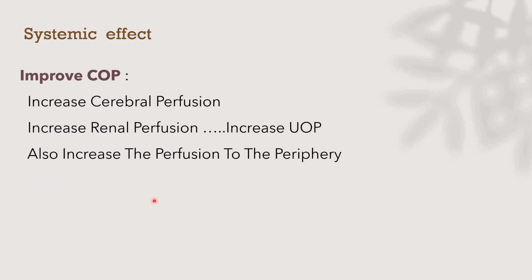As a result of the intra-aortic balloon, increasing systemic effect is reflected by improving cardiac output and increasing systemic perfusion. This is also reflected by increased urine output, increased perfusion to the periphery, a decrease in lactate, and warming of the periphery — all systemic effects of the intra-aortic balloon pump.